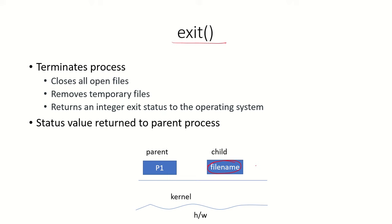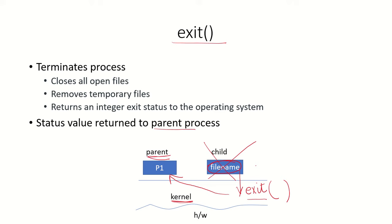The next system call is exit. This exit system call terminates the process. Suppose a process is running and it calls exit — the OS will terminate that process, close all files associated with it, and return an exit status to the parent process. In Unix, each process has a parent, so any time a child process exits it sends a status value to the parent process.